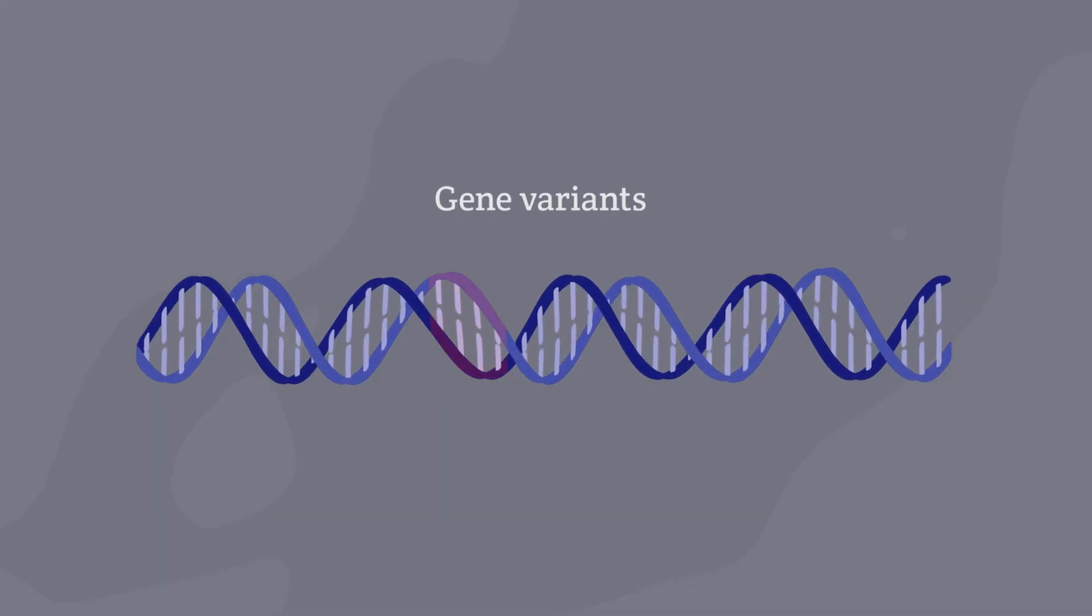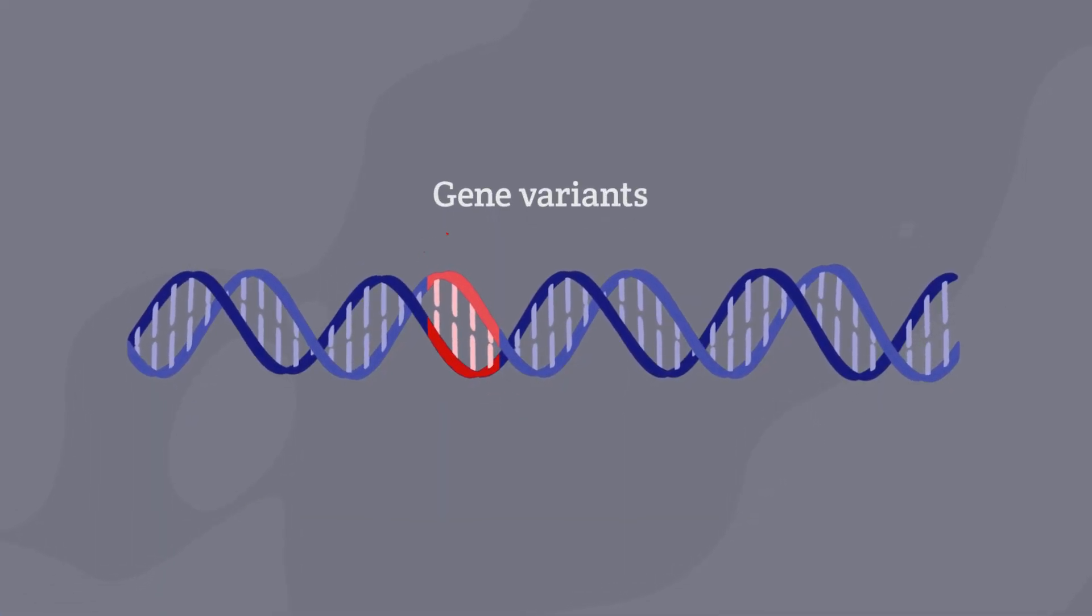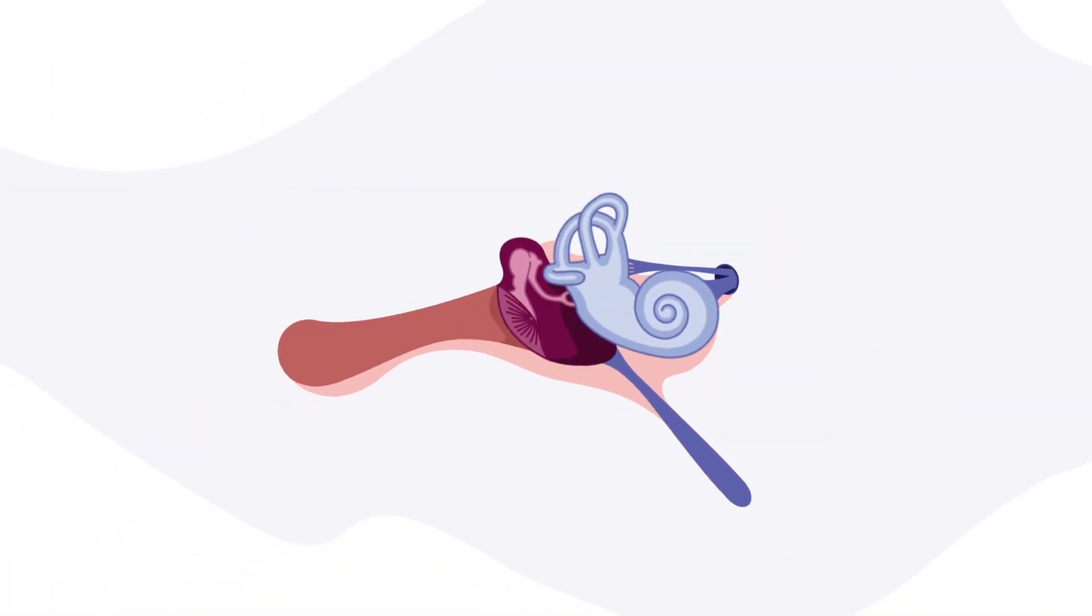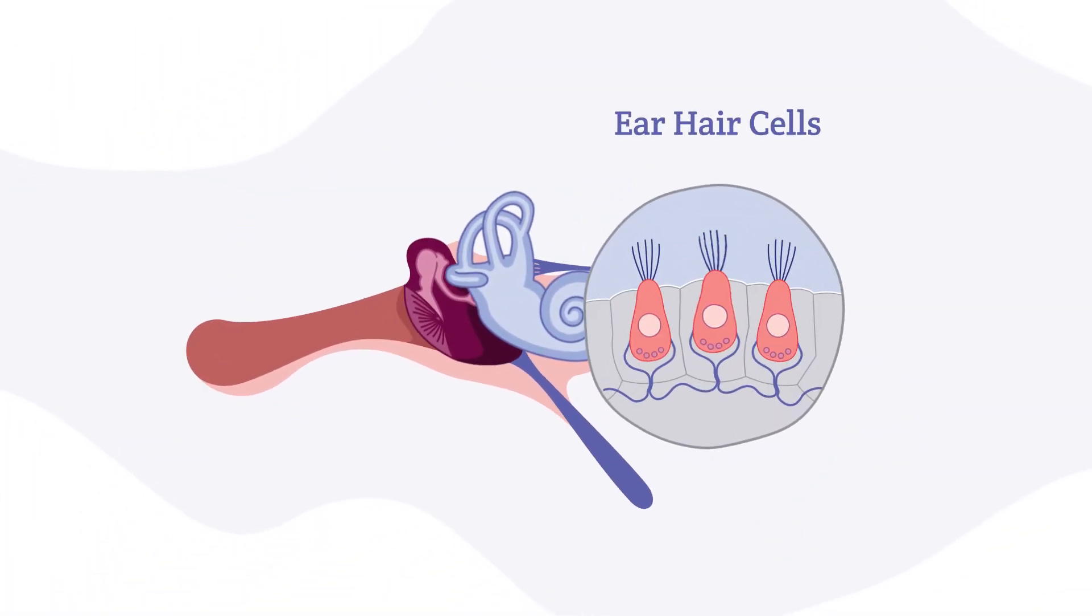Genetic hearing loss may be caused by changes in the genes, known as gene variants, which affect how the ears work. There's thought to be hundreds of types of genetic hearing loss affecting different genes and different cells in the ear.